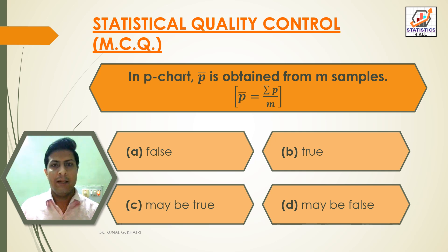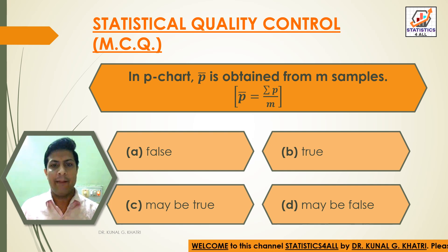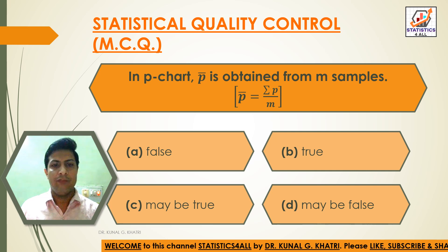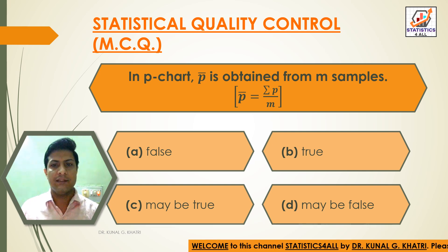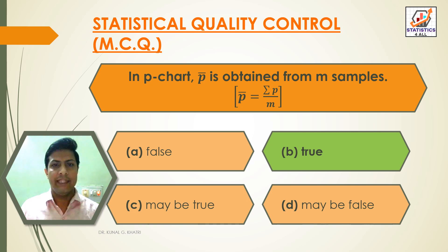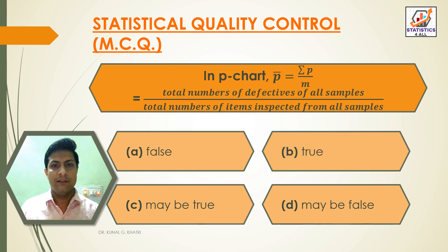Question 14: In P chart, P-bar is obtained from m samples, where P-bar = ΣP / m. Option A: False, Option B: True, Option C: Maybe true, Option D: Maybe false. Answer: Option B — True. P-bar is obtained from m samples where P-bar equals summation of P divided by m.